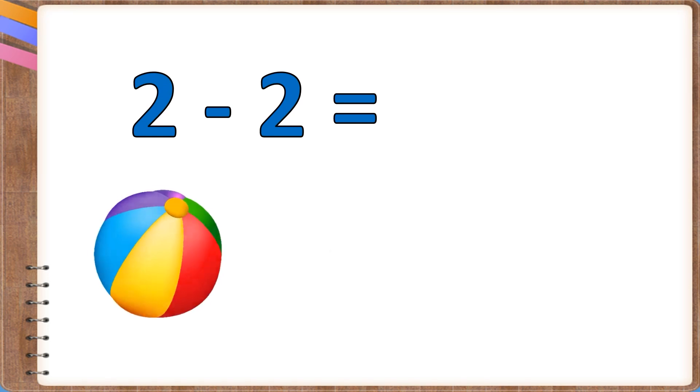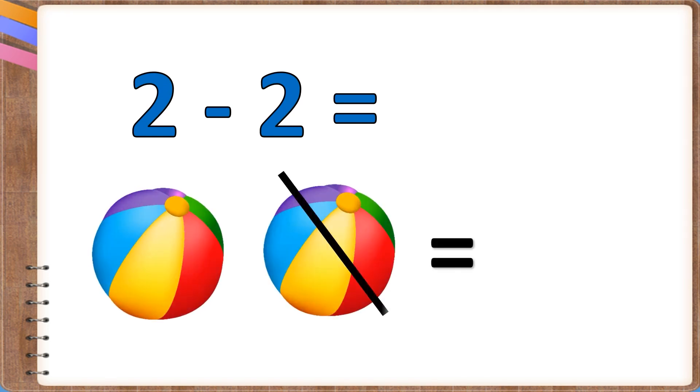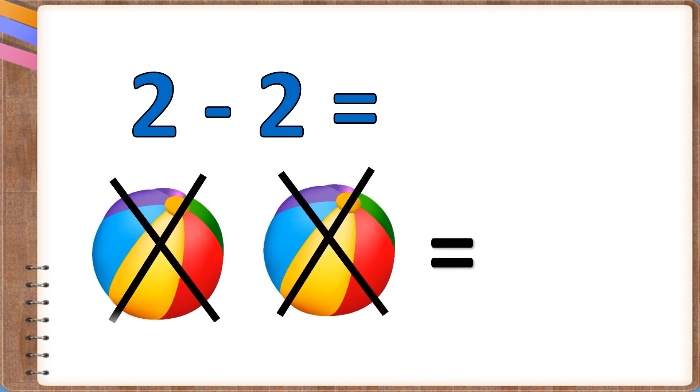2 minus 2. You had two balls. You lost all of them. Now you have no balls.